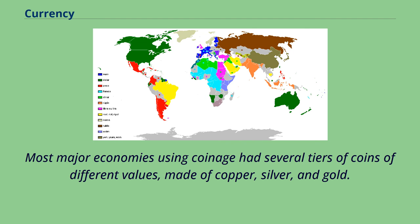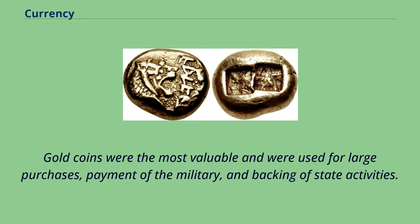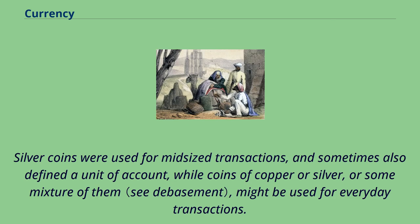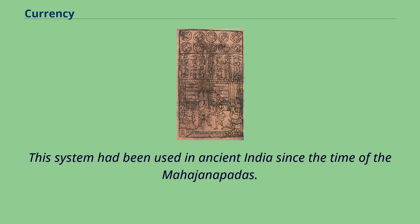Most major economies using coinage had several tiers of coins of different values, made of copper, silver, and gold. Gold coins were the most valuable and were used for large purchases, payment of the military, and backing of state activities. Units of account were often defined as the value of a particular type of gold coin. Silver coins were used for mid-size transactions, while coins of copper or silver, or some mixture of them, might be used for everyday transactions. This system had been used in ancient India since the time of the Mahajanapadas.